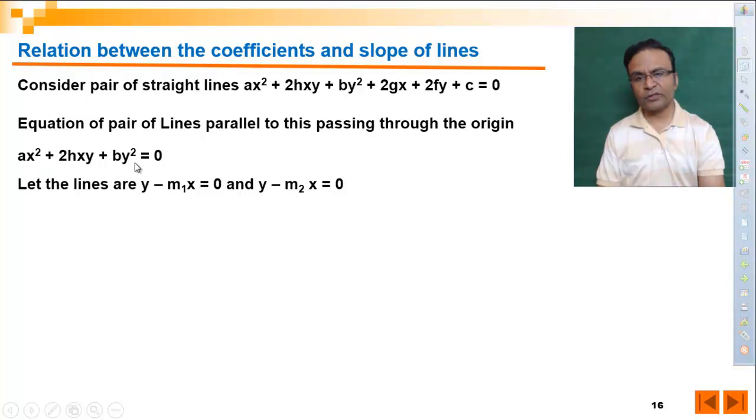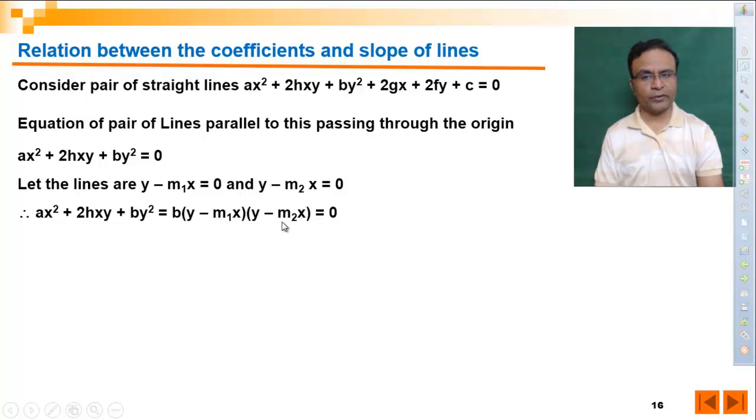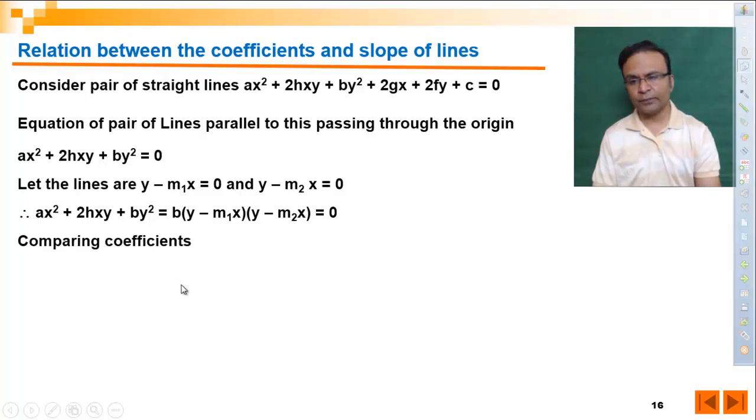Now this equation will be equivalent to y minus m1x times y minus m2x times b, here we are making y square coefficient b because it is b here. These two equations are identical, we can compare coefficients of different terms: say x square, y square, and xy.